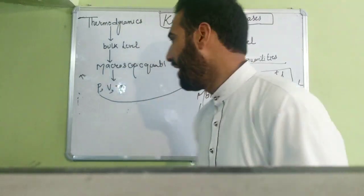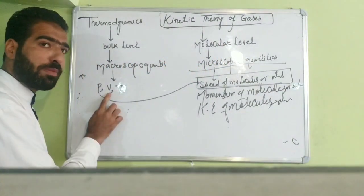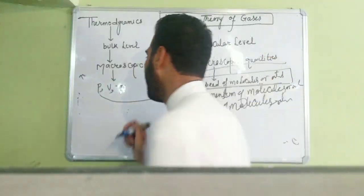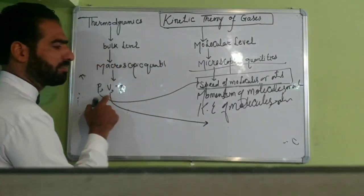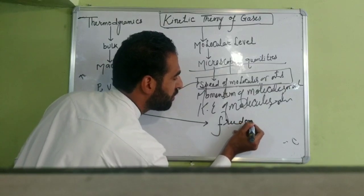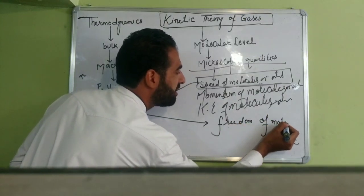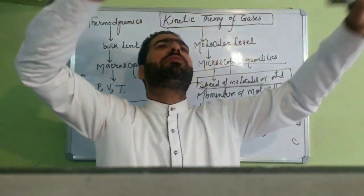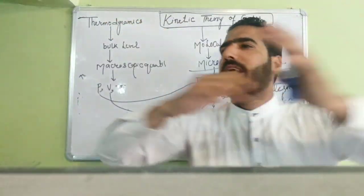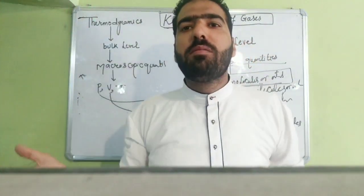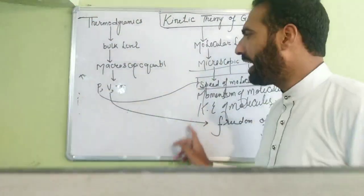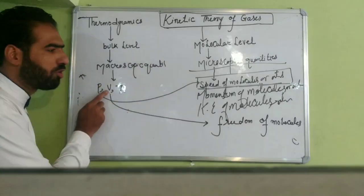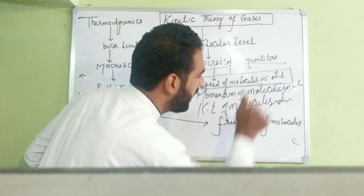Similarly, why does gas occupy the whole volume? Because when it is in random motion, in free flight motion — if there is no intermolecular force, there is free flight of motion. One gas molecule is going this way, the other is going that way. Due to this freedom of molecules, the gas will occupy the whole volume. So the cause of V is due to the freedom of molecules.